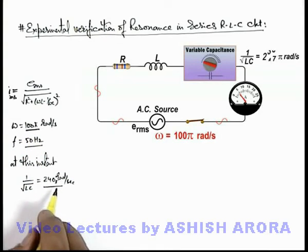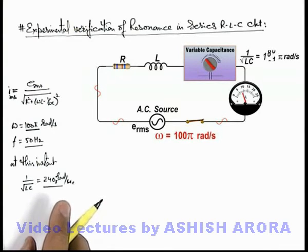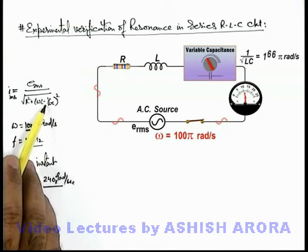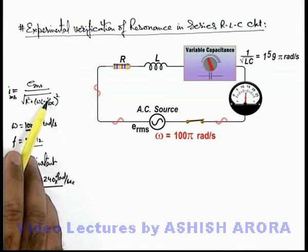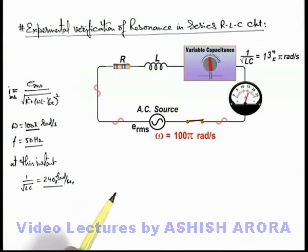So we can see here, as the value of capacitor is increasing, the value of 1 by root LC decreases, and as it decreases you can see the value of current is increasing. Because as capacitance increases, the value of 1 by ωC is decreasing, and as it is getting close to ωL, the value of I is increasing.